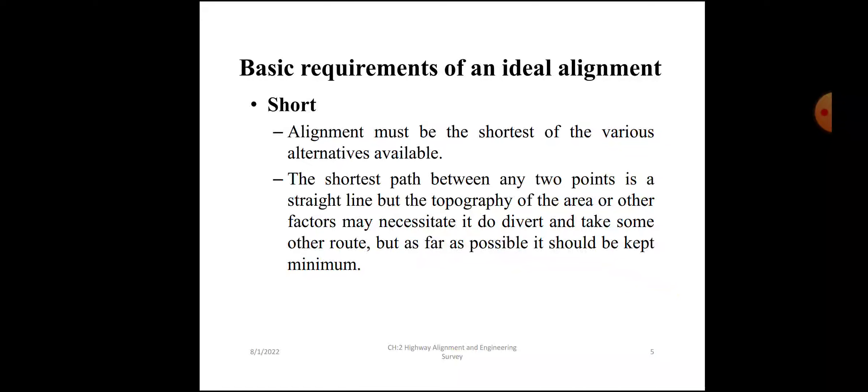Basic requirements of an ideal alignment. Short: the alignment must be the shortest of the various alternatives available. The shortest path between any two points is a straight line, but the topography of the area or other factors may necessitate a diversion to take some other route. As far as possible, however, the length will be kept minimum.